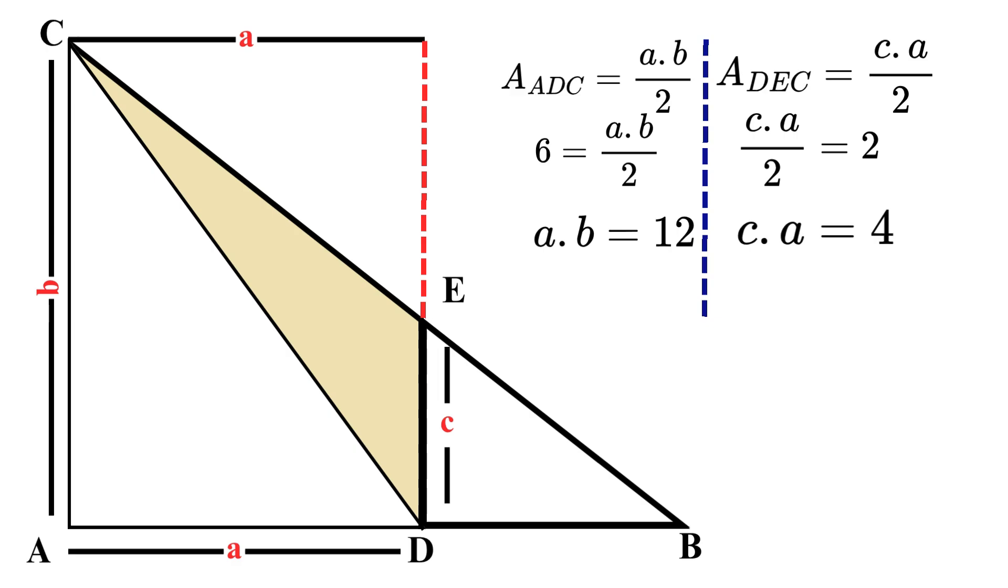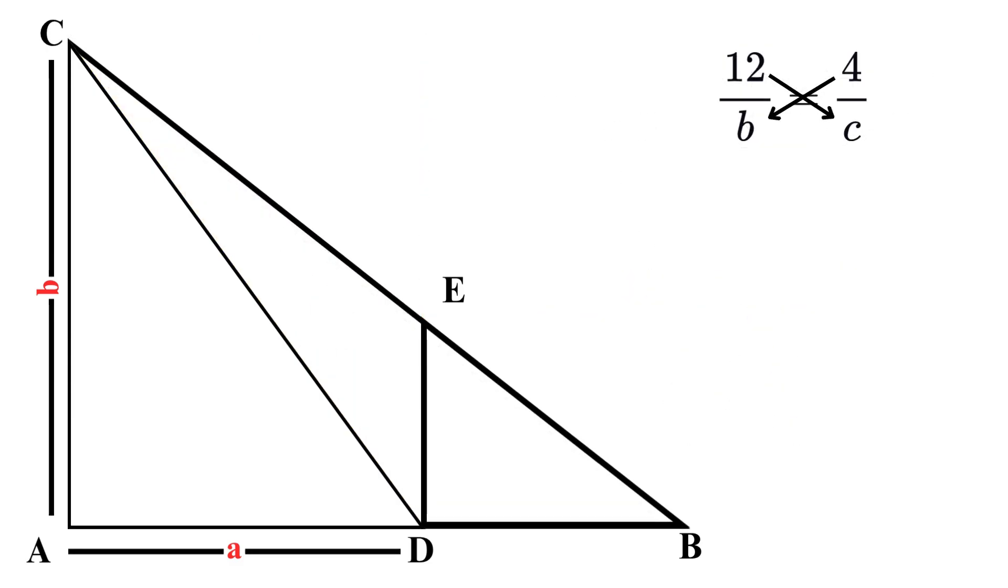From the first equation, we can conclude that a must equal 12 divided by b, and from the second equation, we conclude that a equals 4 divided by c. Since both of these equations are equal to a, this means that 12 over b must equal 4 over c. We can cross-multiply: 12 times c equals 4 times b. Dividing both sides by 4b, we get c over b equals 12 over 4, which simplifies to 3.